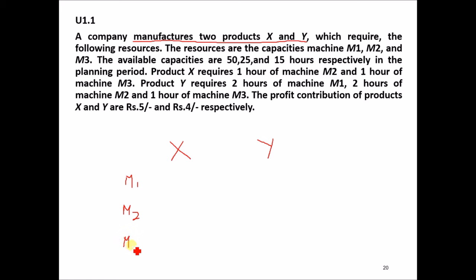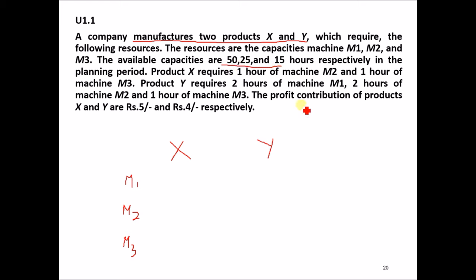Before writing in mathematical form, we set it up in a table. X and Y are the two products manufactured by the company using resources M1, M2, and M3. We put X and Y as column headers and M1, M2, M3 as rows. The available capacities of each machine are 50, 25, and 15 hours, written on the right-hand side.